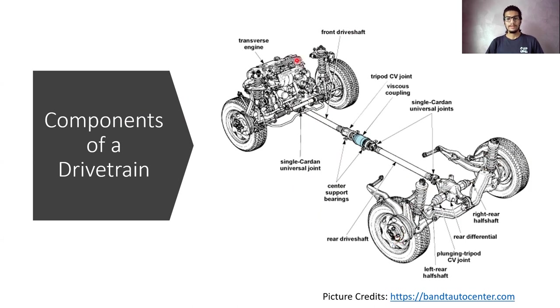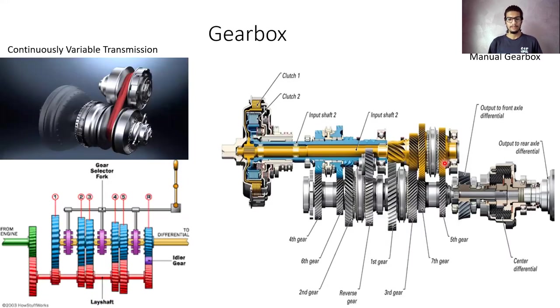Here, some of the components you can see are front driveshaft, tripod CV joint, single Cardan universal joint, rear differential, rear tripod joint, left rear half shaft, and many more. Now, moving to our first component, that is the gearbox.